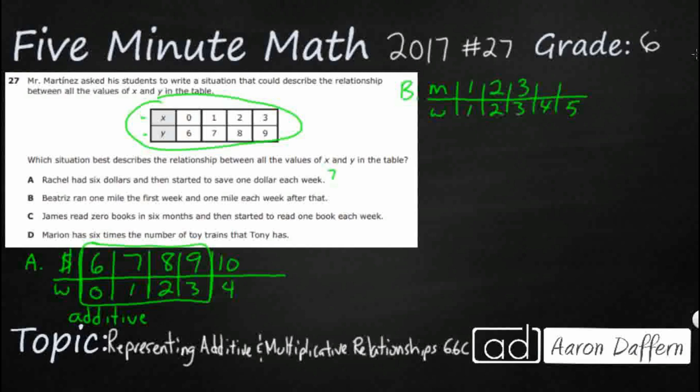So those two values actually just mirror each other. And this is another additive relationship because we're just adding one mile per week.